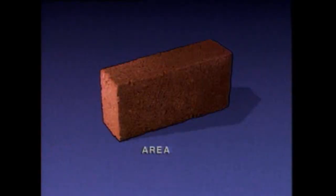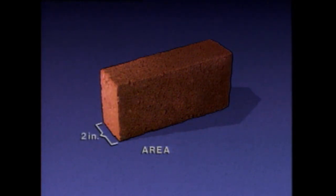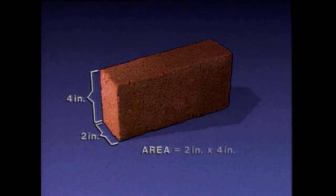Area is a measure of a two-dimensional surface, and volume is a measure of a three-dimensional object or space. Let's use this brick to see how length measurements are used to calculate area and volume. For our discussion of area, we'll focus on this surface. This length measurement is two inches, and this one is four inches. The area is calculated by multiplying these two measurements together.